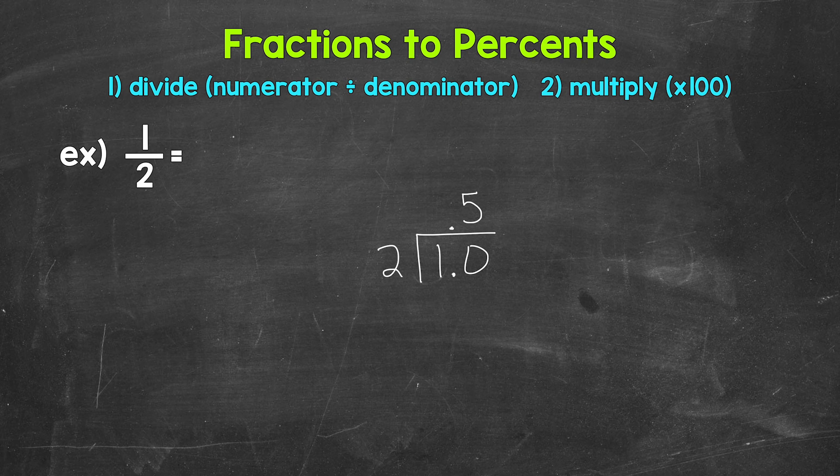Now we multiply. Five times two is 10. 10, subtract 10 minus 10 is zero. We have a clean cut zero there at the bottom and nothing else to bring down within our problem. So we are done.